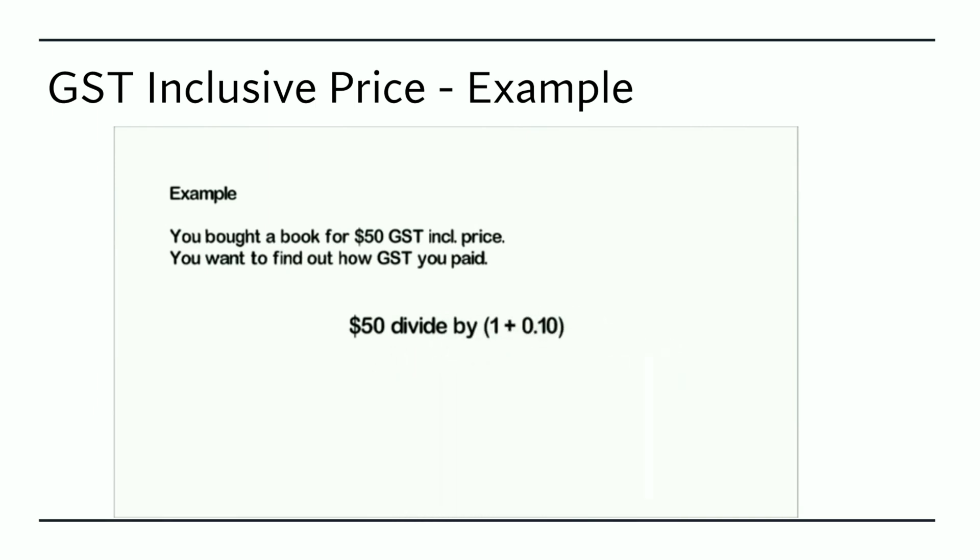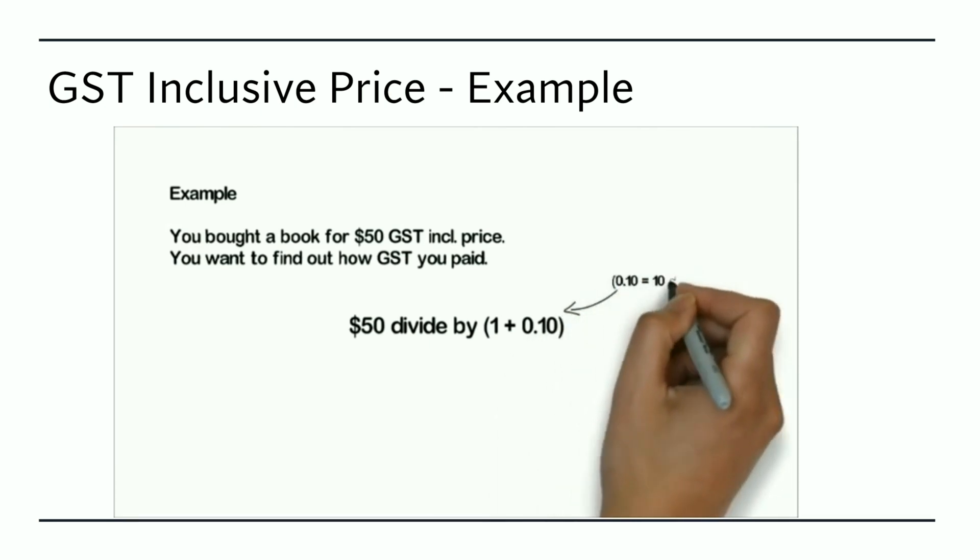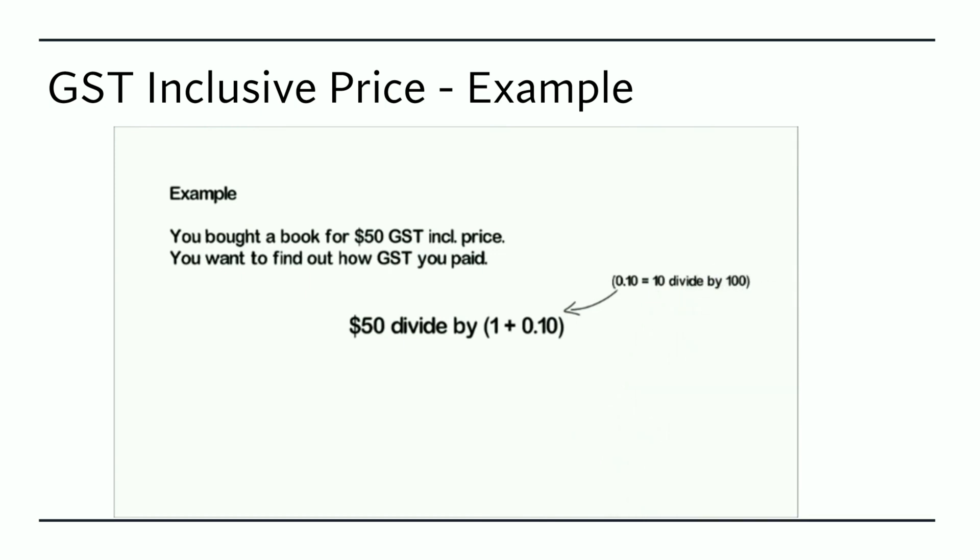Once again, we get the 0.10 by taking the 10% and dividing that by 100 to arrive at our decimal of 0.10. So then $50 divided by 1.1 is equal to $45.45 GST exclusive, which means that the amount of GST paid was $4.55.